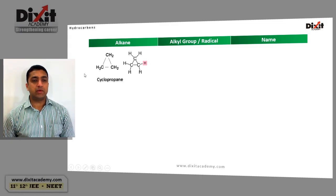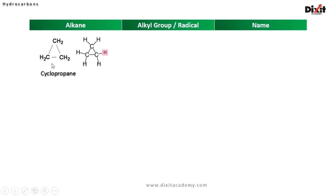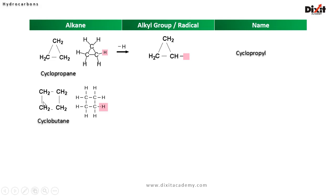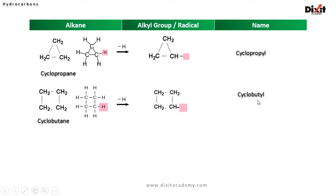Consider cyclopropane, where all three carbon atoms are linked in a cyclic way. All the carbon atoms are secondary. If we remove a hydrogen from any one of the carbon atoms, we get the cyclopropyl group. In cyclobutane, all four carbon atoms are linked in a cyclic way and all are secondary. If we remove any hydrogen, we get the cyclobutyl group.